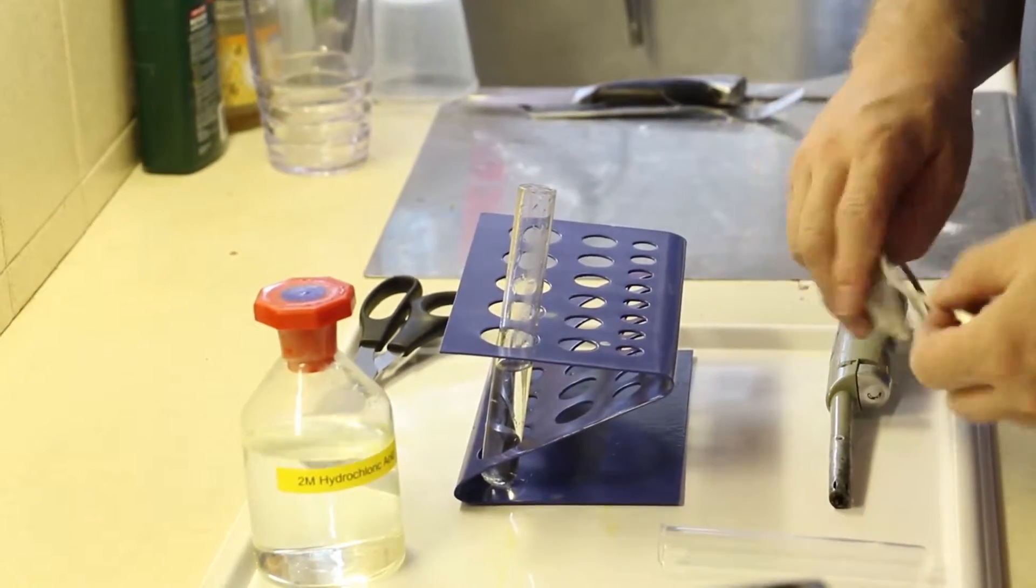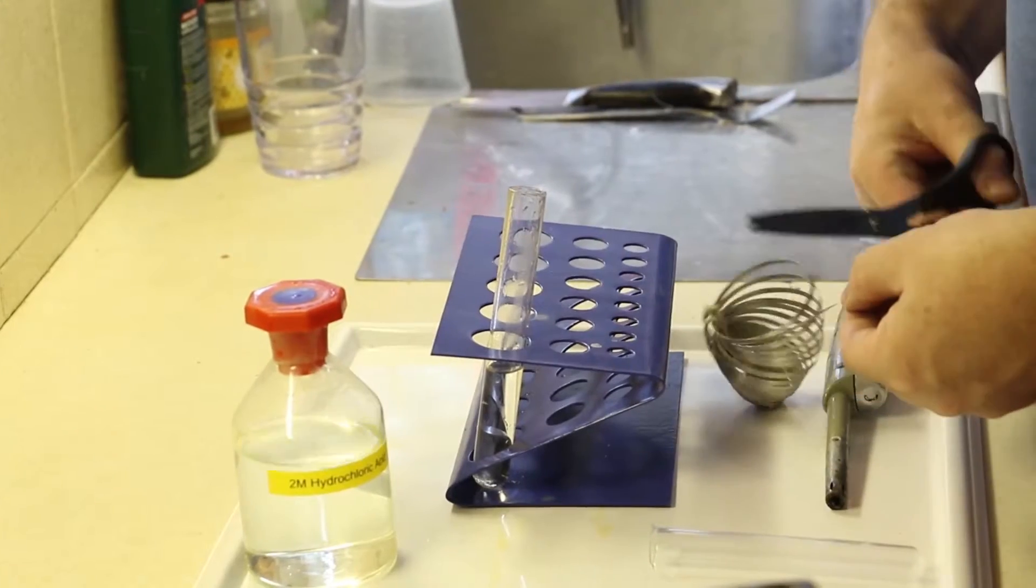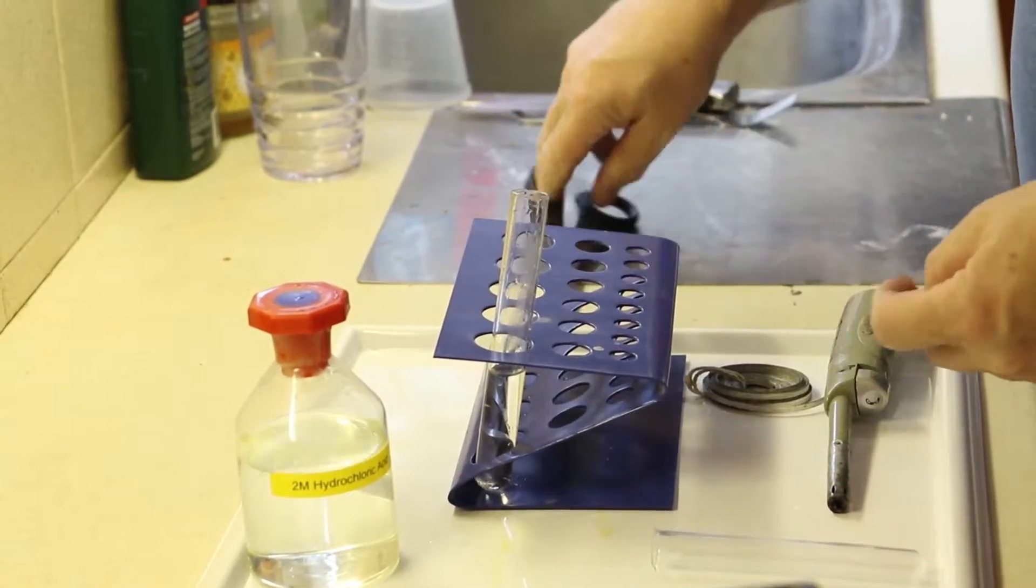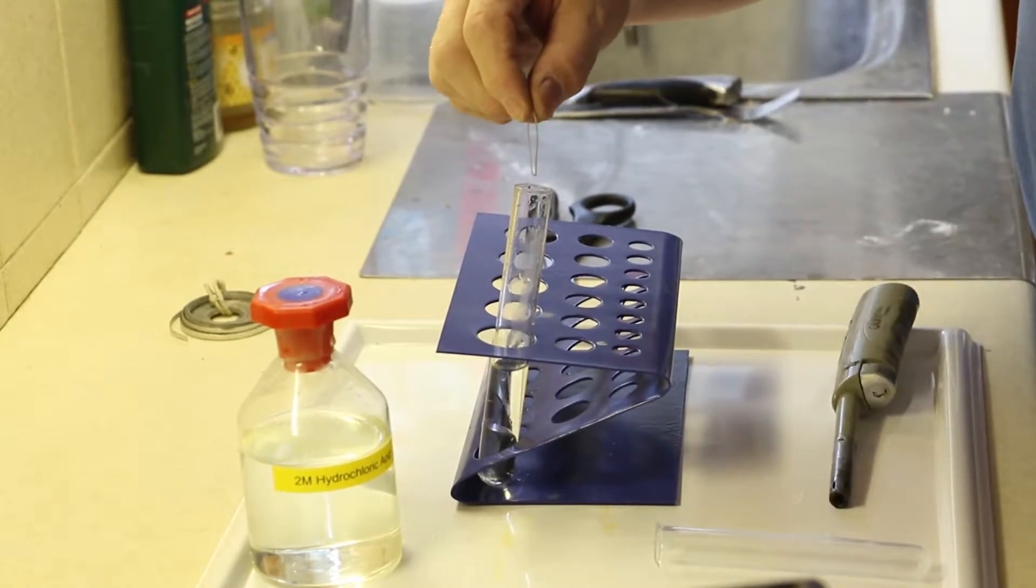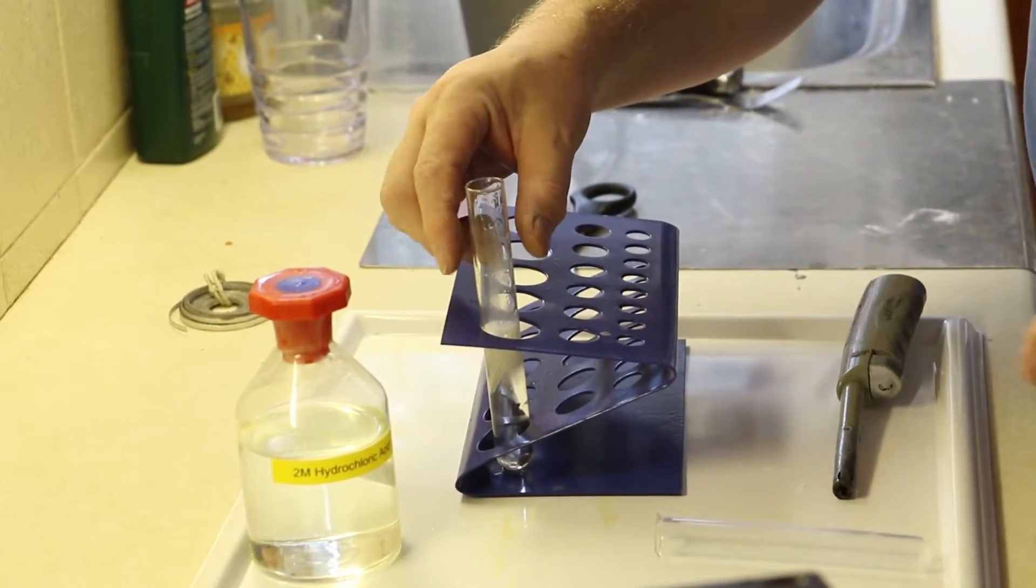We're then going to take a small amount of magnesium ribbon, fold it in half, and put that in there.